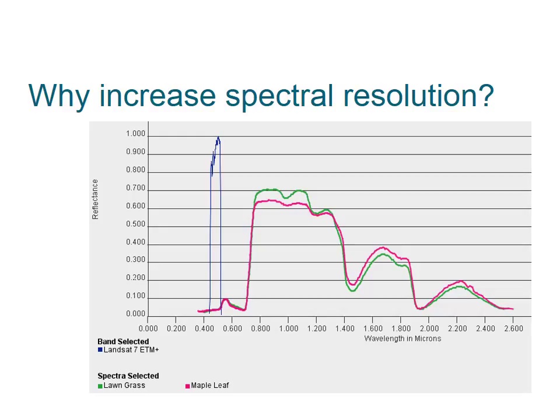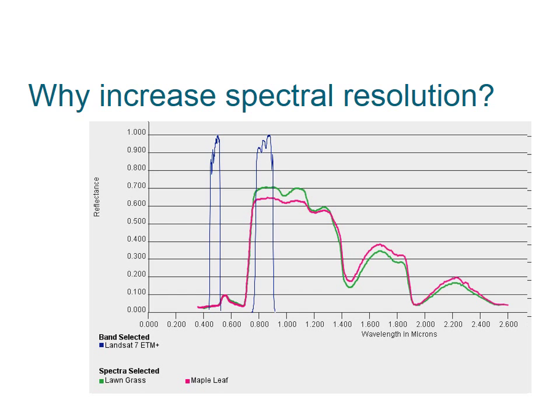The answer is no. Lawn grass and maple leaves have approximately the same spectral signature in the visible light spectrum from 0.4 to 0.7. By increasing spectral resolution — by collecting data in band four, the near-infrared region — we can now distinguish between long grass and maple leaves.